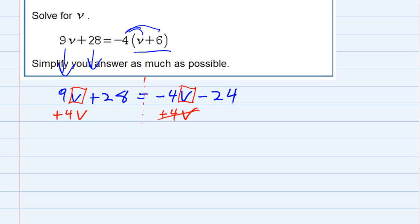And on the left we're gonna have to add, but on the right the v's cancel, minus 4v plus 4v. Adding on the left gives us 13v plus 28 equals negative 24, just bringing that down.